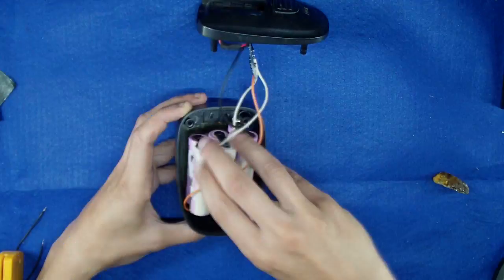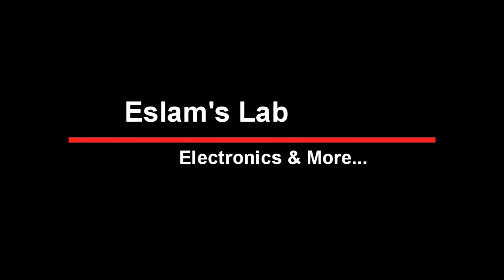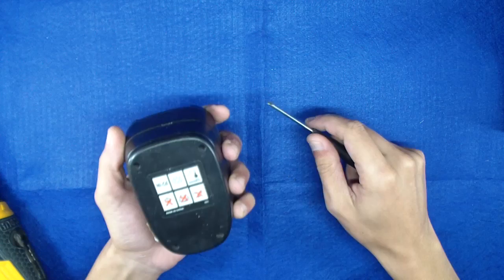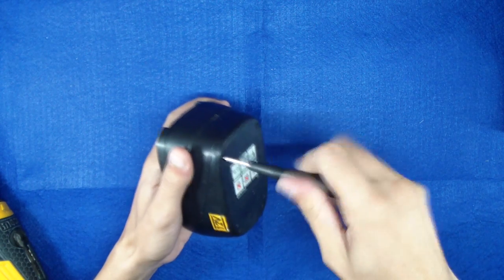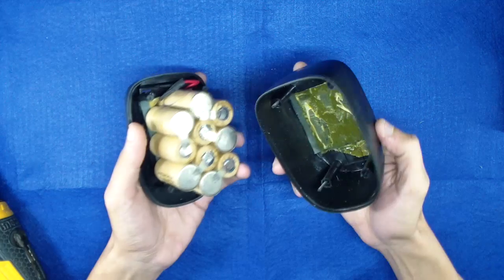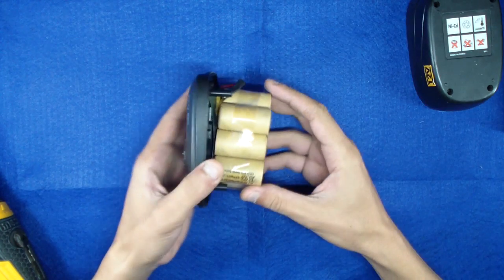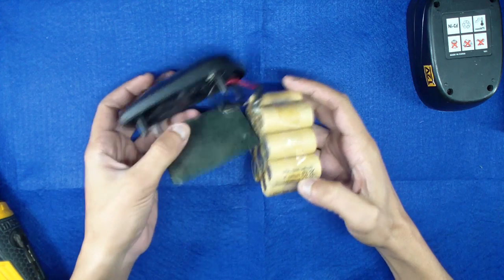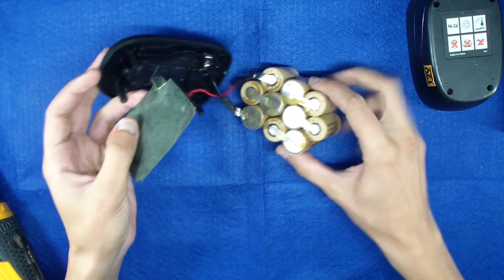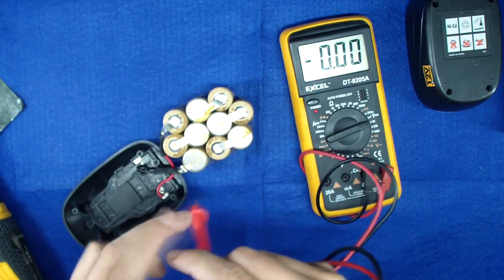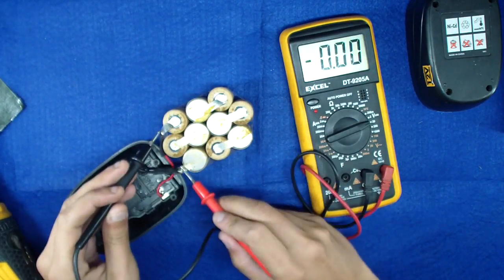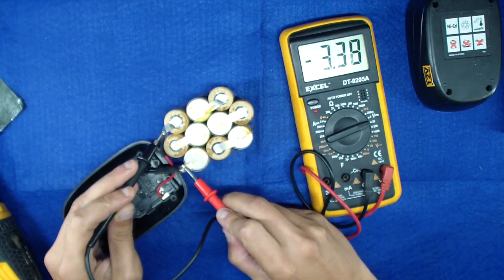Let's get started. First I will tear down the battery pack. Here you can see it contains 12 NiCd batteries connected in series. By measuring them, they give just three volts, so they are dead.